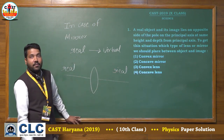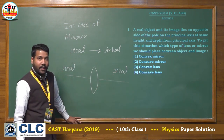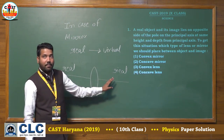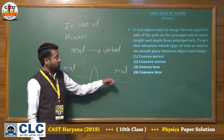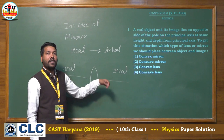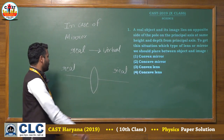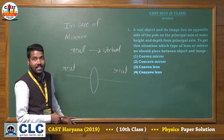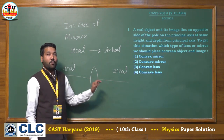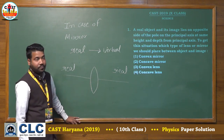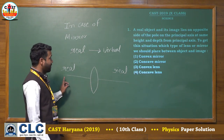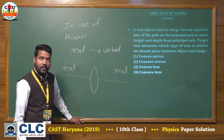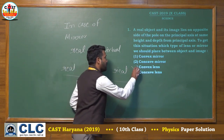Also, when a convex lens forms a real image of a real object, it is inverted, and the magnification can be equal to 1. A concave lens forms a real image of a real object, but its magnification is less than 1. So the correct answer of this question is the third option: convex lens.